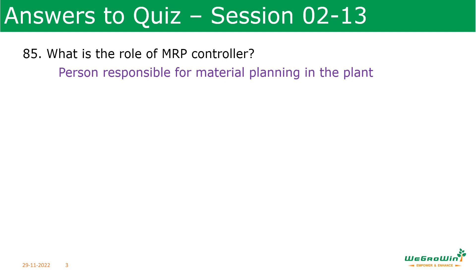What is the role of MRP controller? MRP controller is the person responsible for material planning in the plant. Similar to the purchasing group — the person responsible for buying operations — the MRP controller plays an important role: responsible right from planning, follow-up in production, whether it is received in stock. They should be responsible end-to-end for materials, which gives complete accountability for each material. Defining this MRP controller is very, very important for any organization.